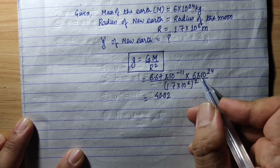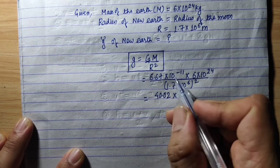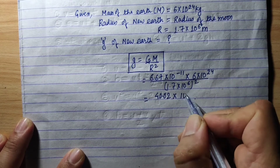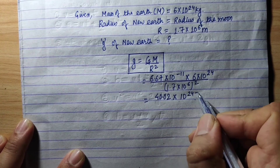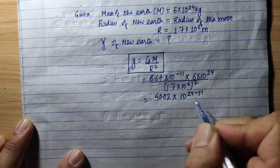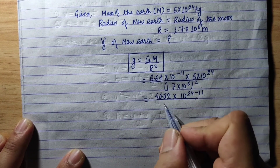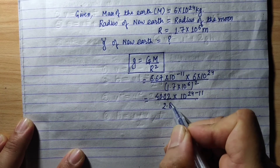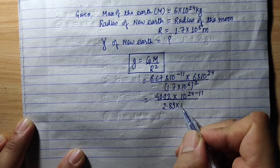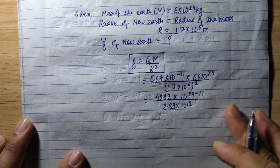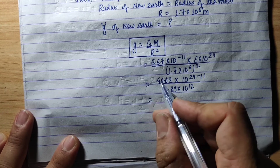We substitute: G = 6.67 × 10⁻¹¹, M = 6 × 10²⁴. Then we work on the indices by adding the powers. We calculate 1.7 squared equals 2.89, and 10⁶ squared equals 10¹². So we divide 40.02 by 2.89.